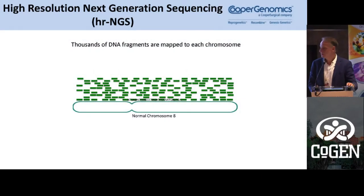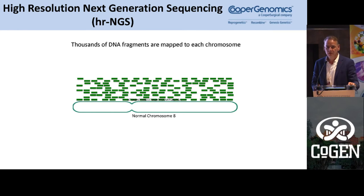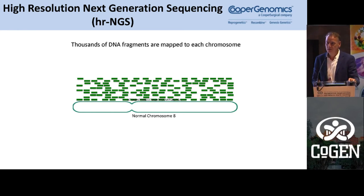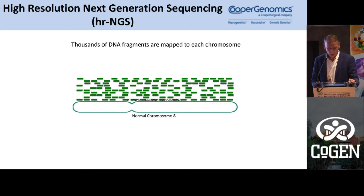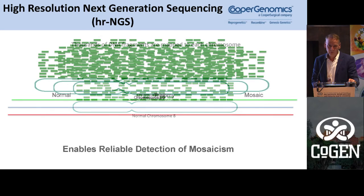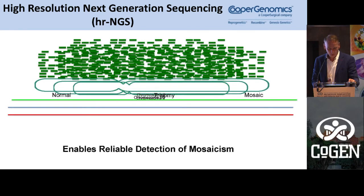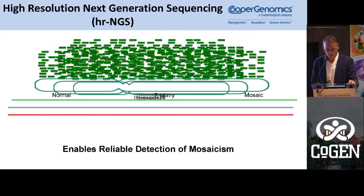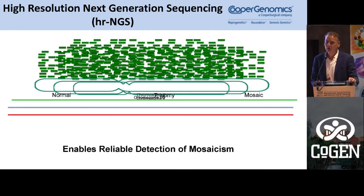Just a little bit about how next-generation sequencing works: basically you get a bunch of sequences that are mapped to each chromosome, and then you compare them to each chromosome. Depending on the amount of sequences you have, you can determine if a chromosome is normal, abnormal, or in between — and if it's in between, you have a mosaic.